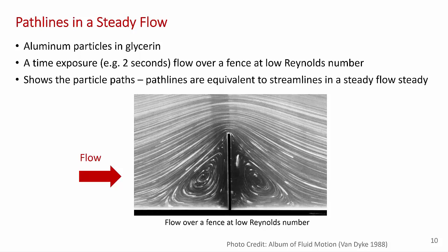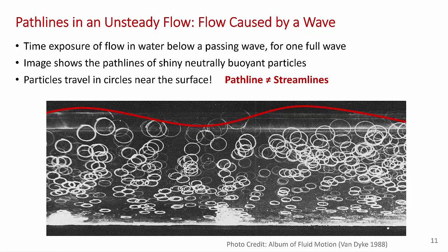This is another example of using long duration time exposure to get path lines. I find this photograph particularly fascinating. What you're looking at is a side view of several feet of water and up at the top is the free surface. I've drawn a red line at the top just to indicate the wavy free surface. And again, the water was seeded with little shiny particles that are neutrally buoyant. And what the experimenter did was open up the shutter and allow a wave train to pass by. And of course, the shiny particles traced their actual paths in space as the wave passed by.